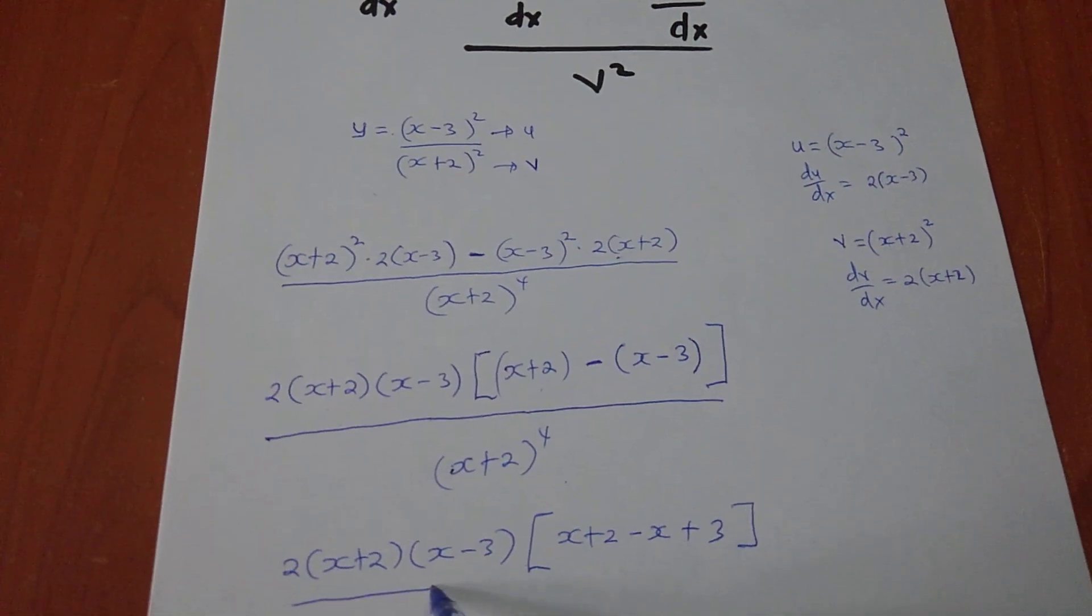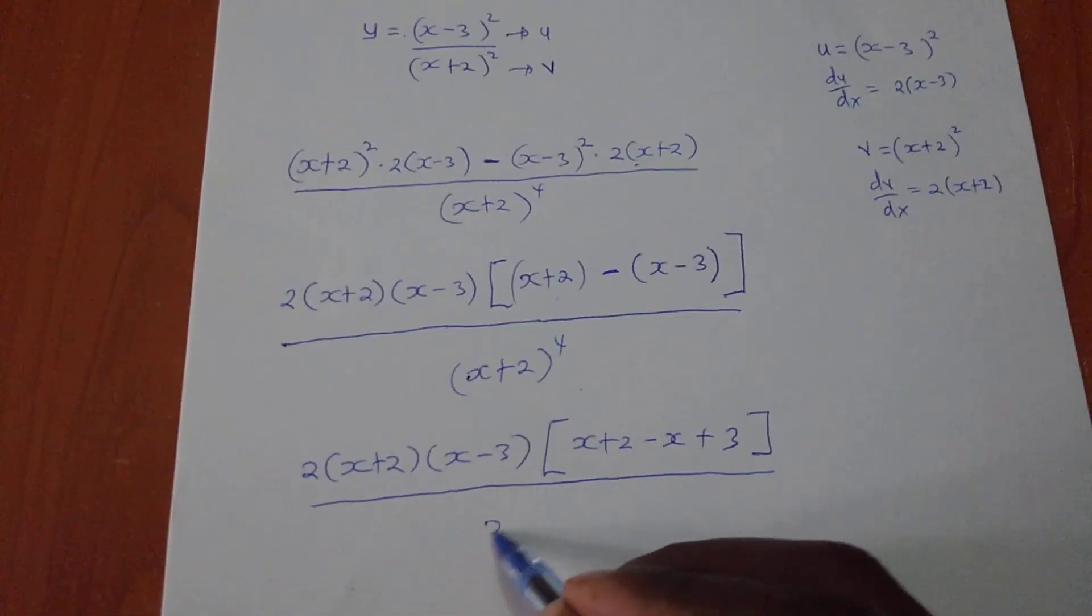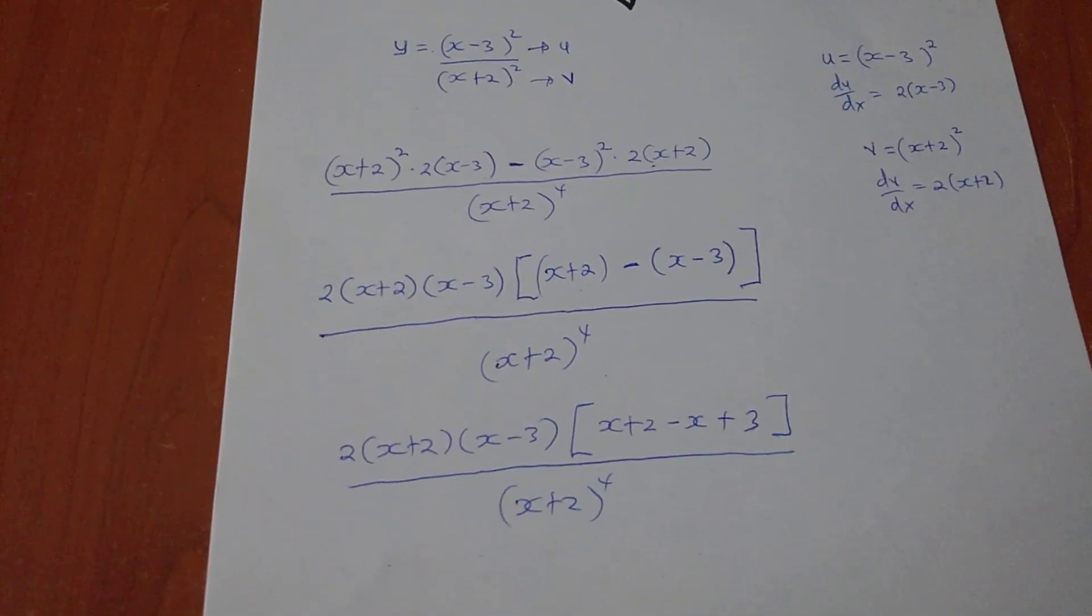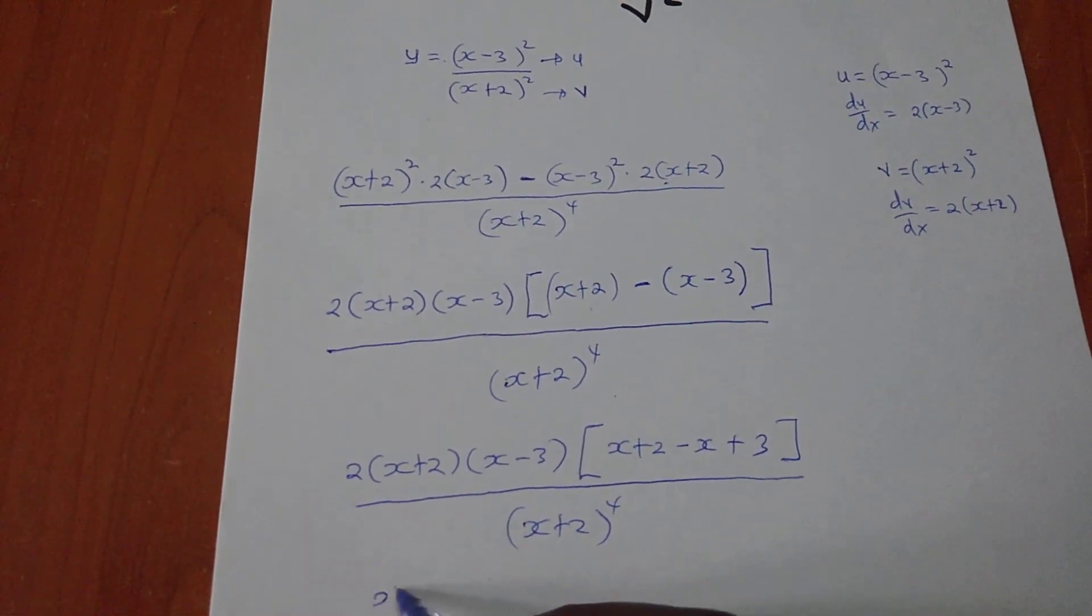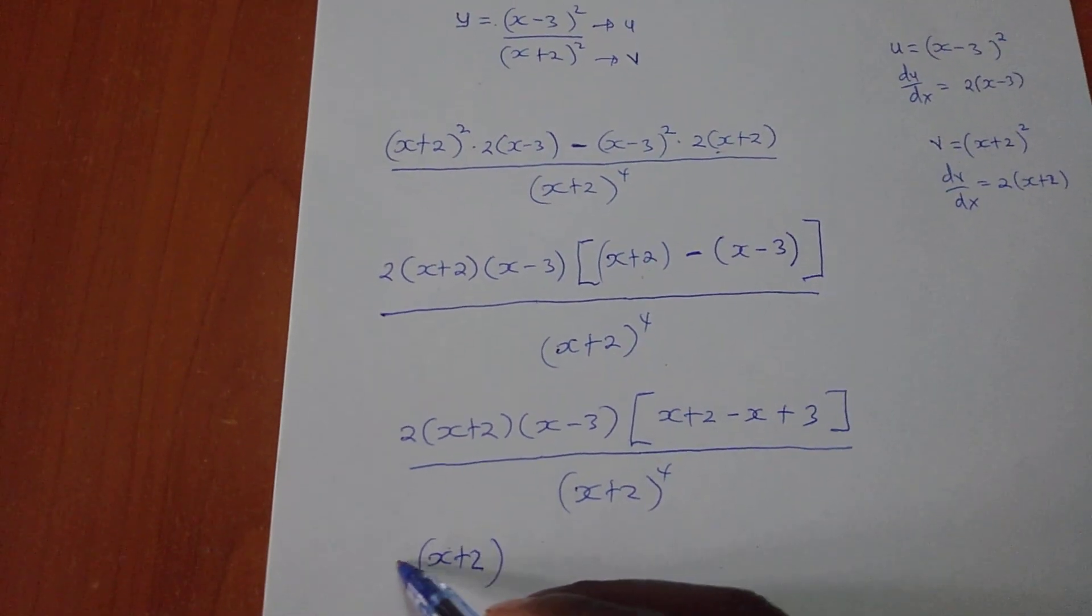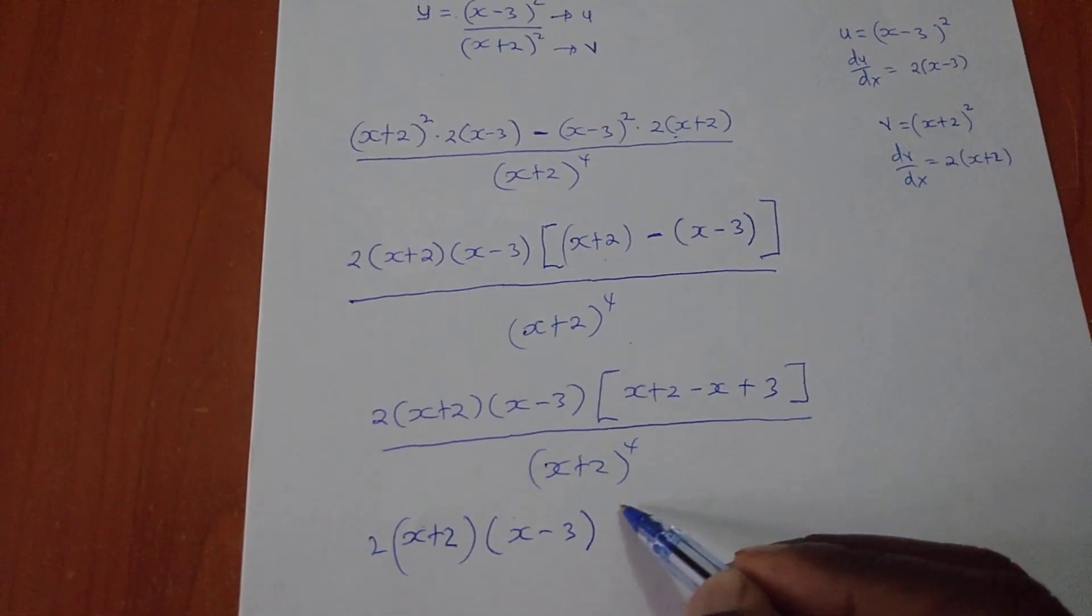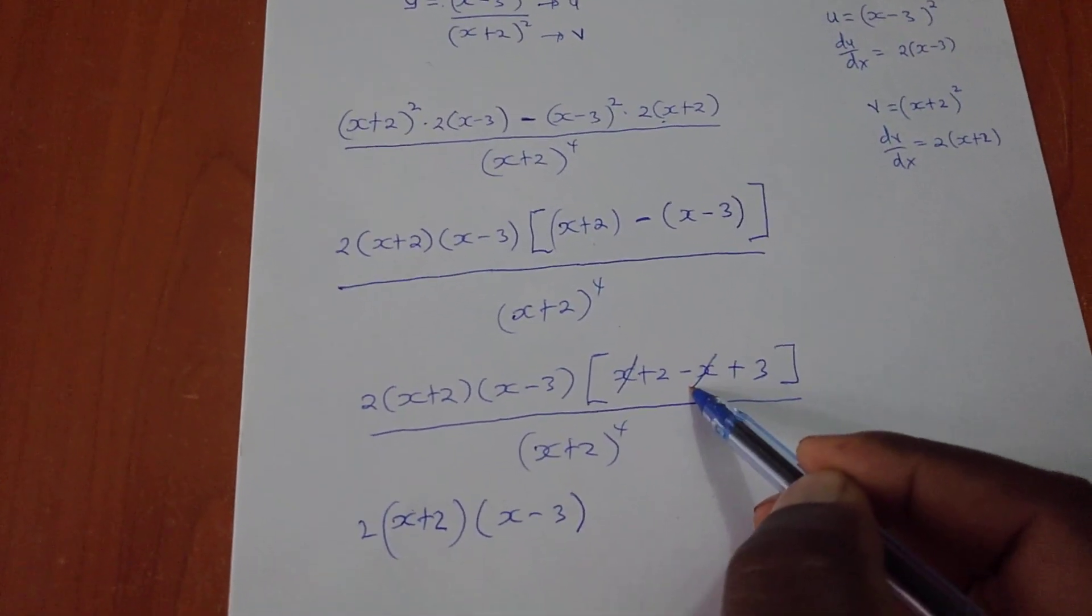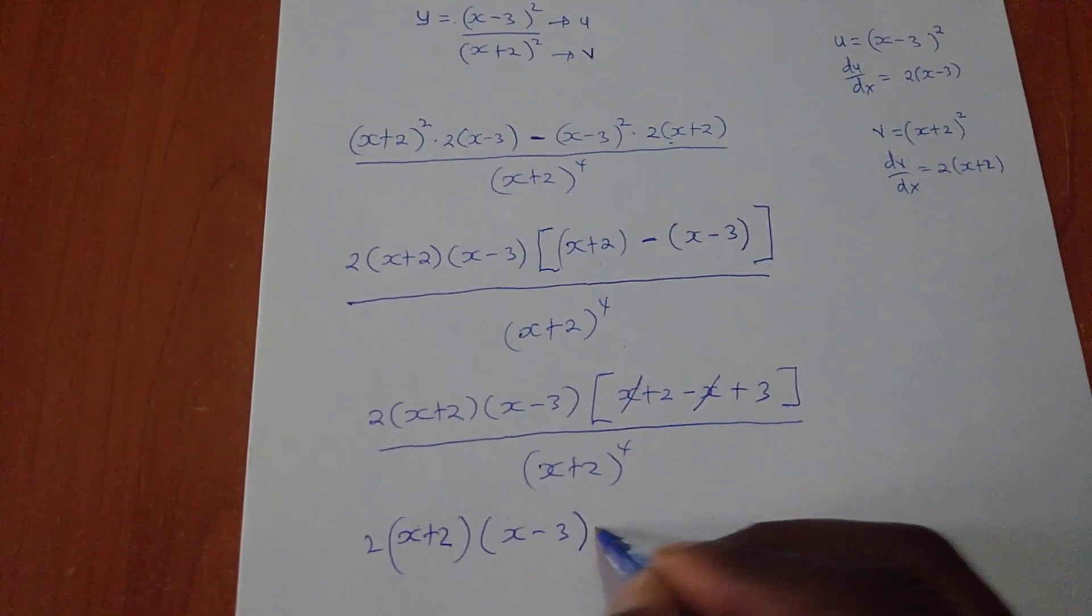Over (x plus 2) to power 4. So in here I will have (x plus 2)(x minus 3), then in here this x will go with that one and I will remain with 5, so times 5, all over (x plus 2) to power 4.